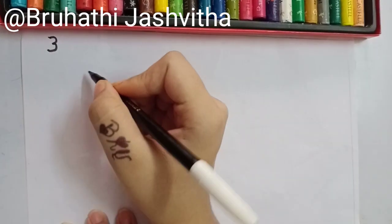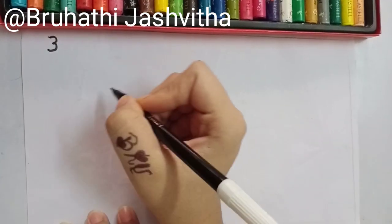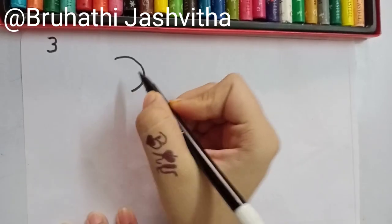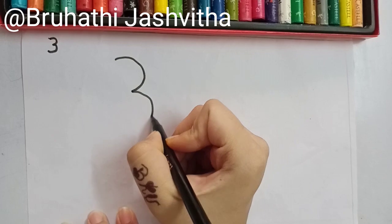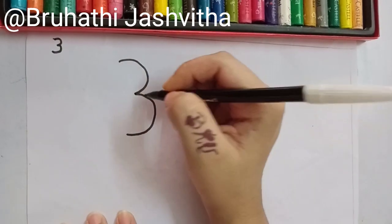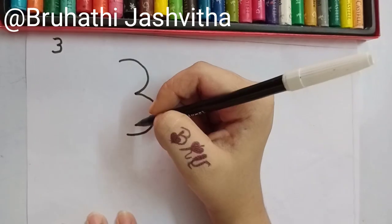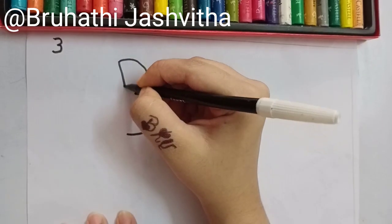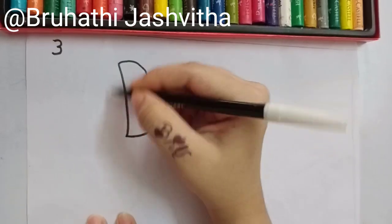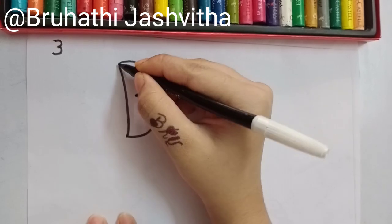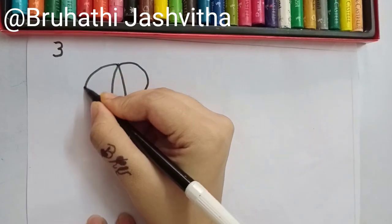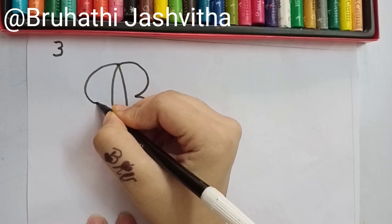There was number 3, and its friend called it for a party. Whenever you go for a party, where do you get ready? In front of the mirror, right? So this number 3 is also getting ready in front of a mirror. What can you see in the mirror? Your reflection. So this number 3 can also see its reflection. Let us draw this number 3's reflection.